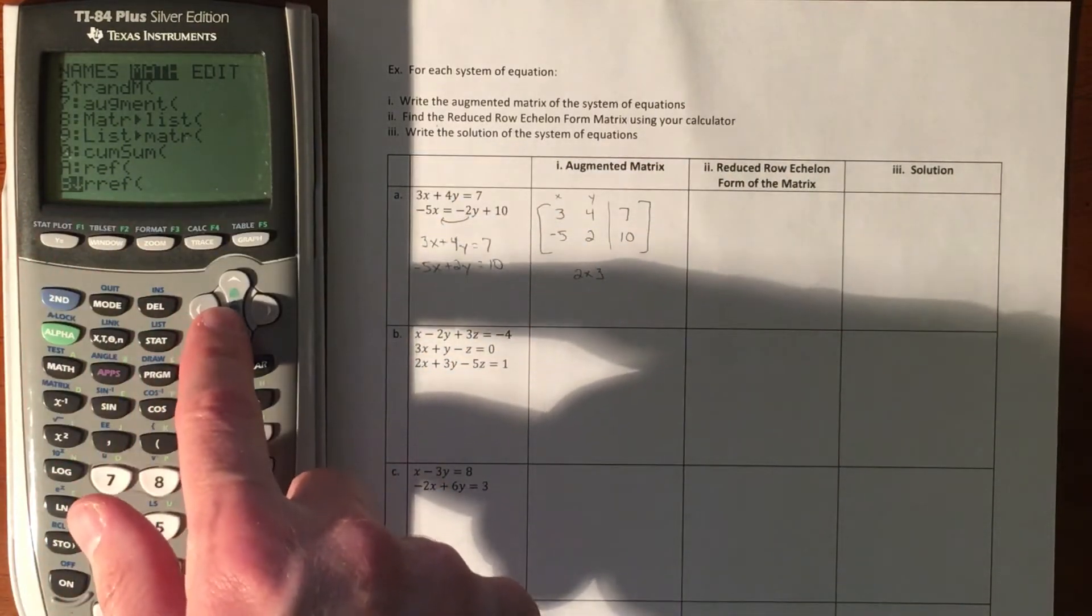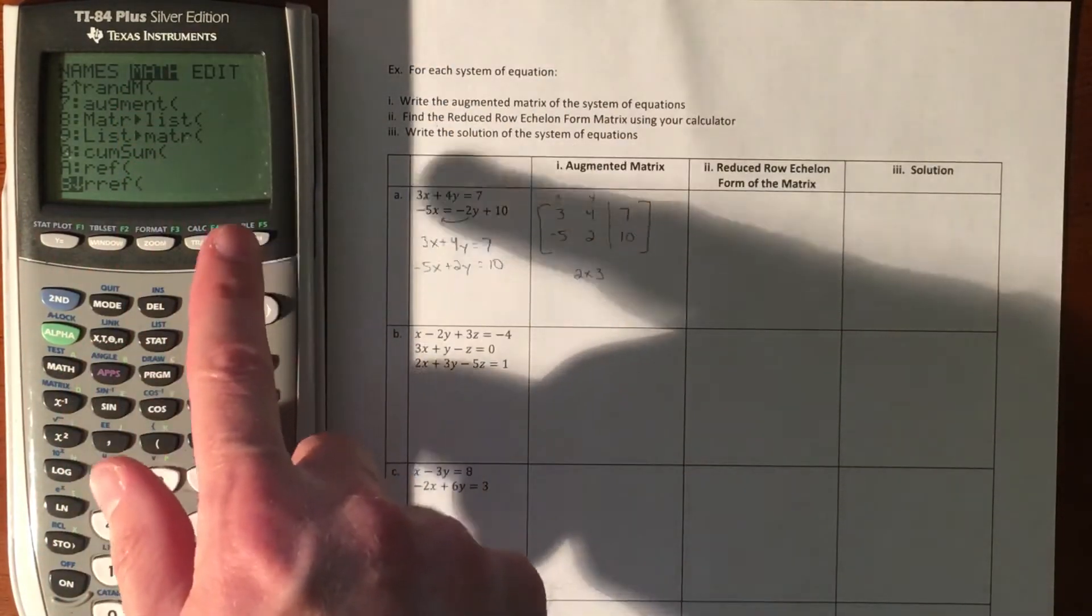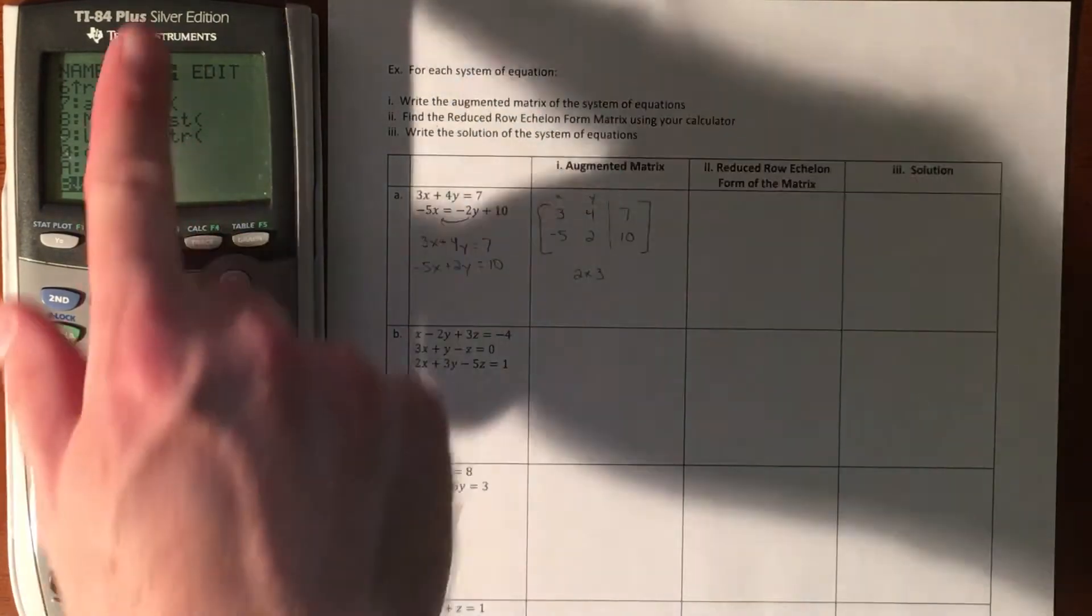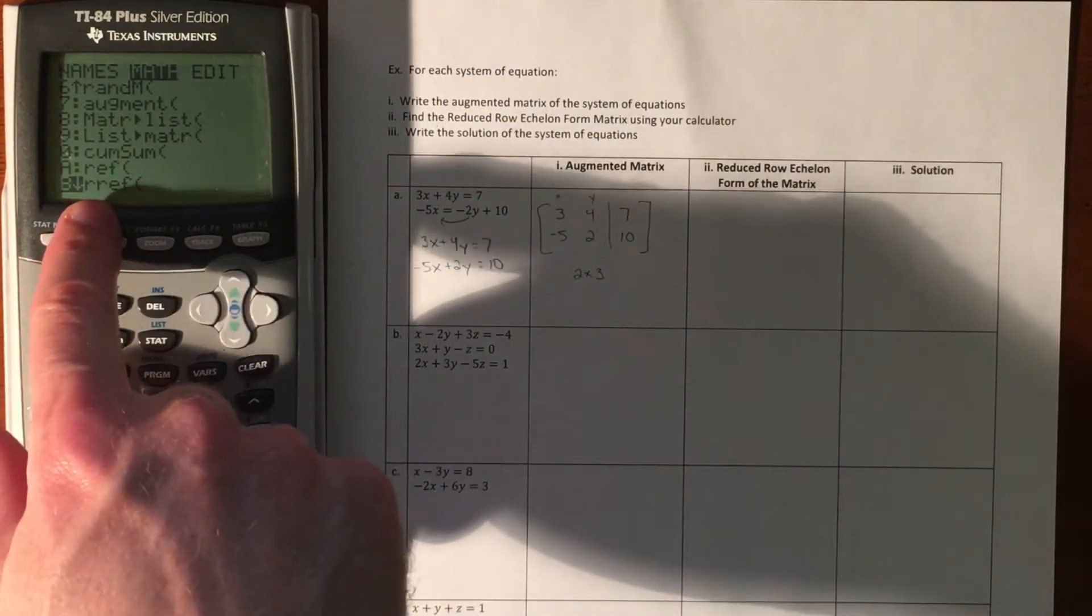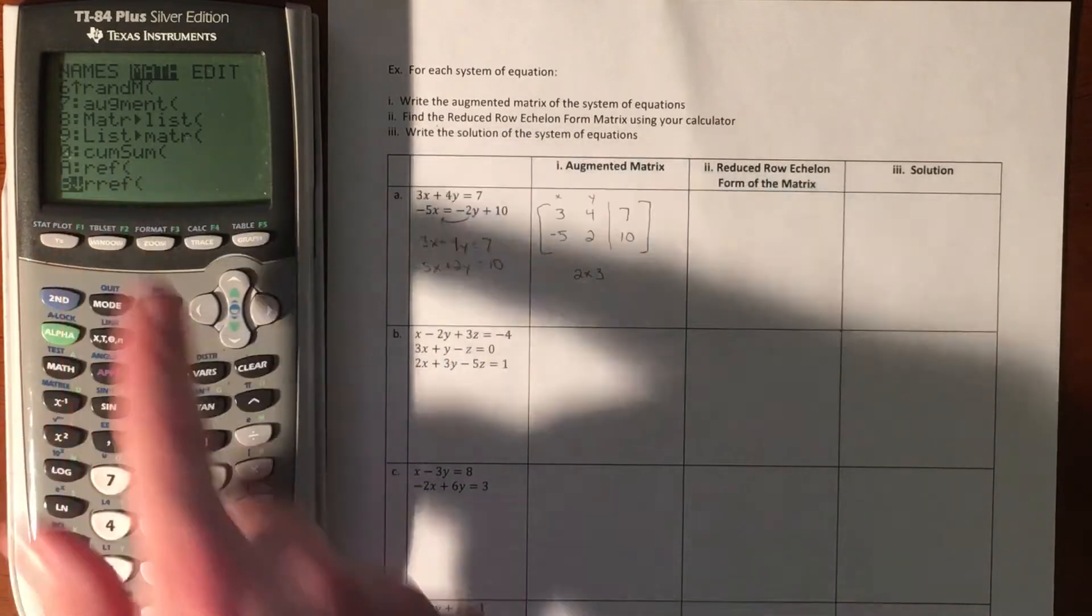We could get that by going down through the list or going up and starting at the bottom and working our way up. Row reduced echelon form: R-R-E-F.